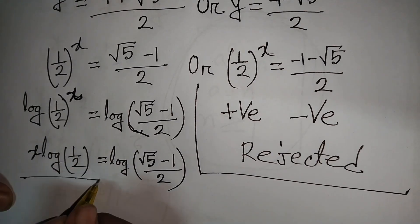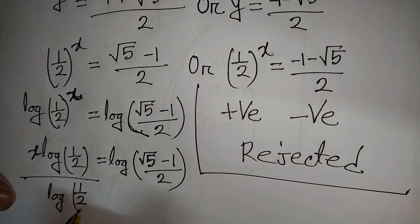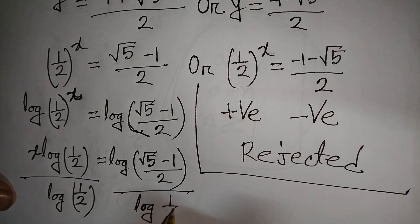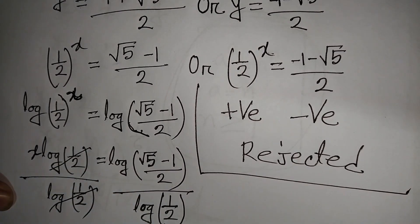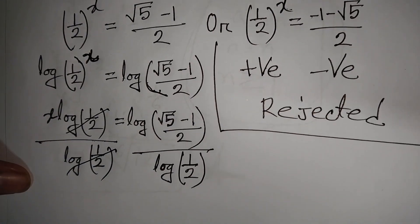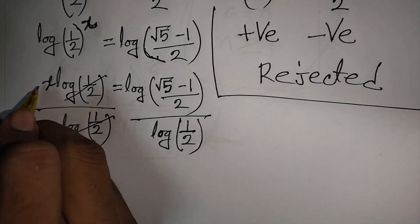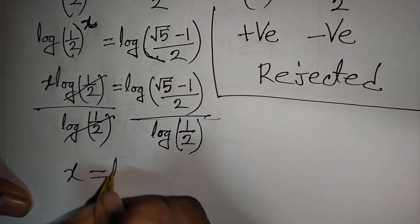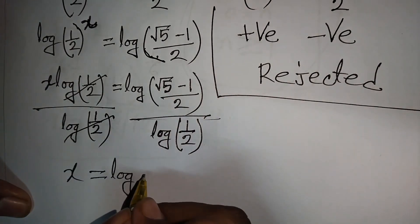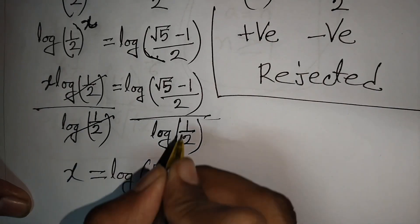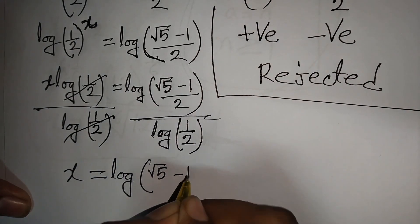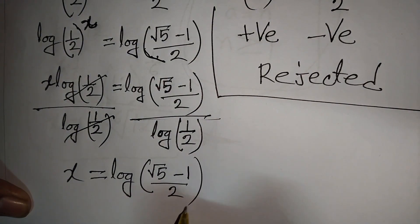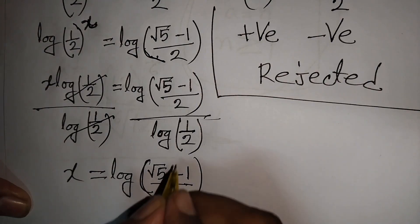To find x, we divide both sides by log(1/2). The log(1/2) cancels, giving x = log((√5 - 1)/2) / log(1/2), which equals log base (1/2) of ((√5 - 1)/2). This is our final answer.